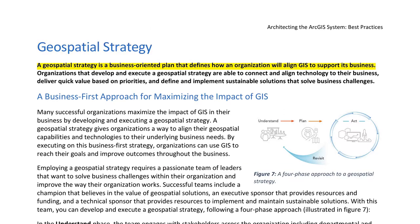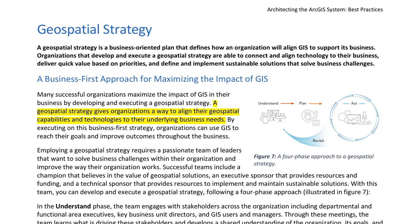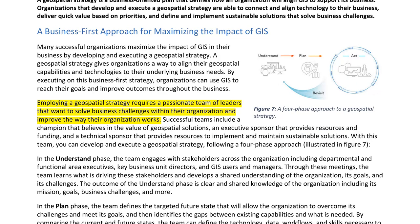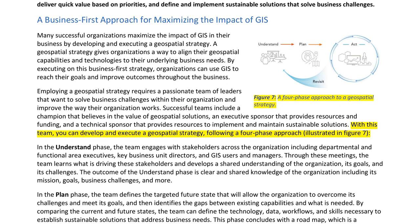Geospatial Strategy. A geospatial strategy is a business-oriented plan that defines how an organization will align GIS to support its business. Organizations that develop and execute a geospatial strategy are able to connect technology to their business, deliver quick value based on priorities, and define sustainable solutions. Employing a geospatial strategy requires a passionate team including a champion that believes in the value of geospatial solutions, an executive sponsor that provides resources and funding, and a technical sponsor that provides resources to implement and maintain sustainable solutions. With this team, you can develop and execute a geospatial strategy following a four-phase approach illustrated in Figure 7.